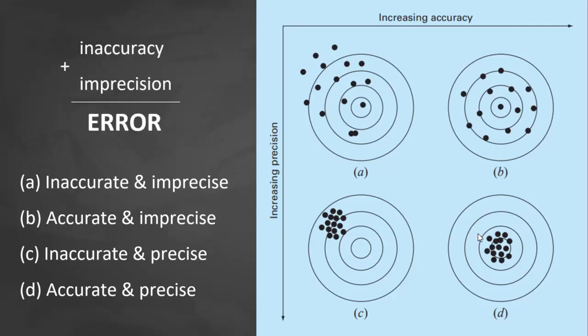In numerical methods, error is a collective term. It represents both the inaccuracy and imprecision of our predictions. So inaccuracy plus imprecision, that's the error.